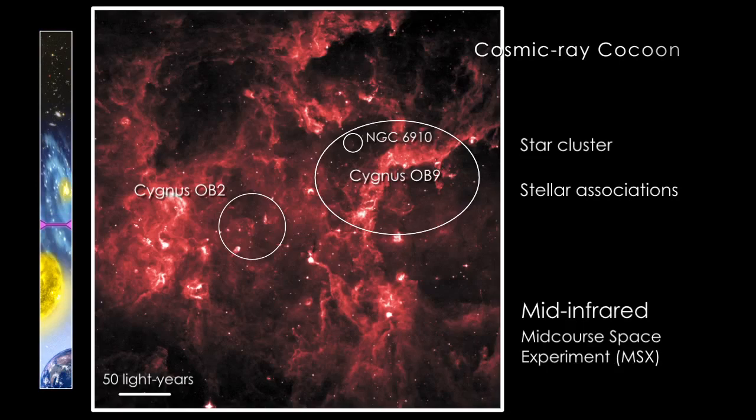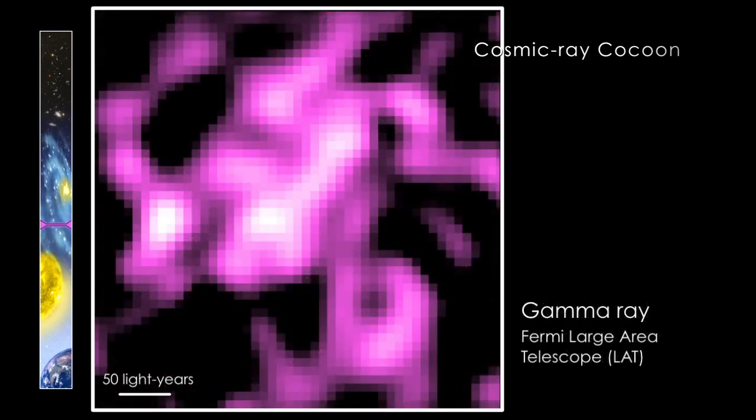Fermi found that star birth and death in the Cygnus X star factory corrals particles and boosts them to cosmic ray energies.